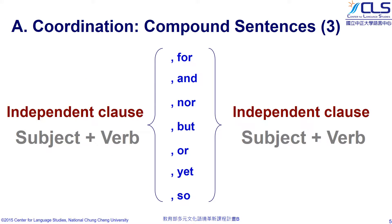We link two independent clauses with coordinating conjunctions. By independent clause, it means the clause contains a subject and a verb. And by the way, always put a comma in front of the conjunction.